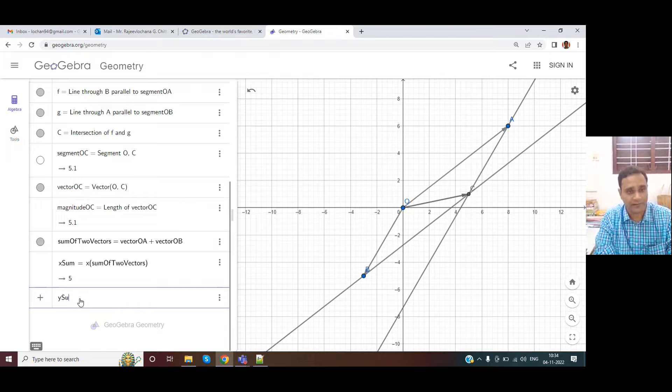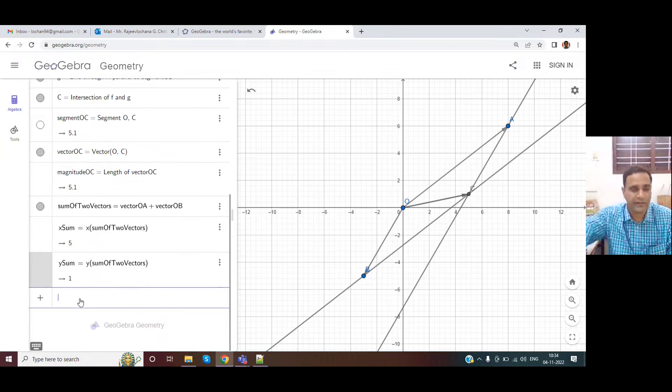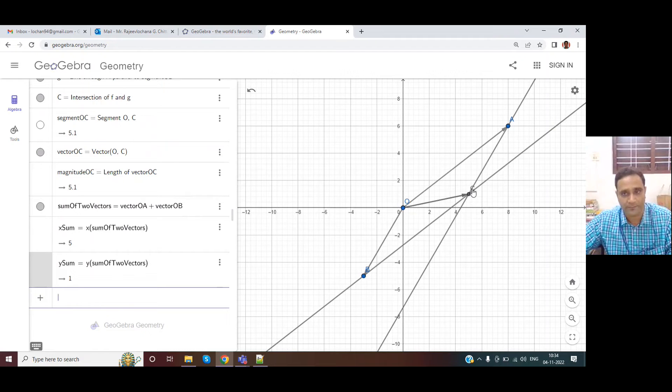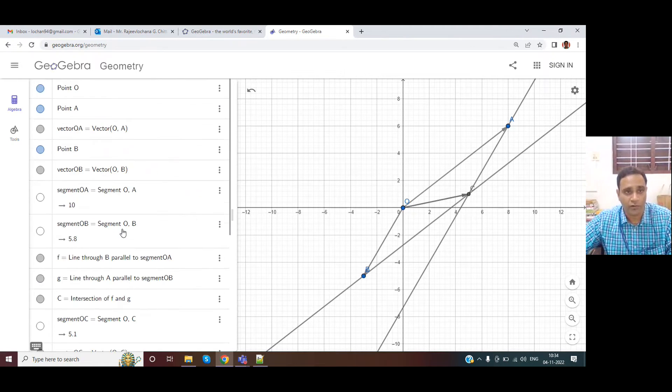Similarly, I'll have Y sum is equal to Y of sum of vectors. Five and one. So those are the components of this particular point C. So a lot of things can be done using GeoGebra where parallelogram law, vector addition, vector subtraction and other things can be taught to the students. Thank you. I'll see you in the next video.